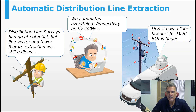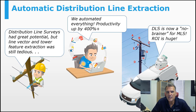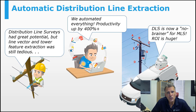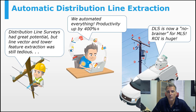We've worked on several specific applications like automatic distribution line extraction. We really got into this and improved the performance and productivity by about 400%. Right now, distribution line surveys is a no-brainer for mobile LIDAR surveys, and the return on investment is huge. We'll share some of those numbers with you too.